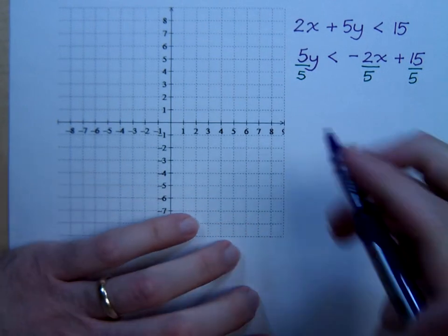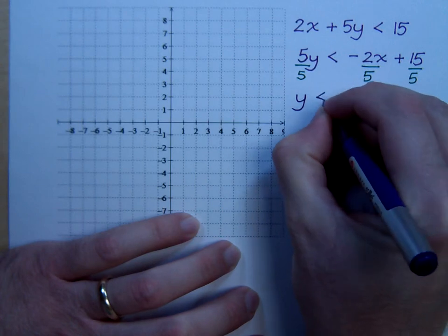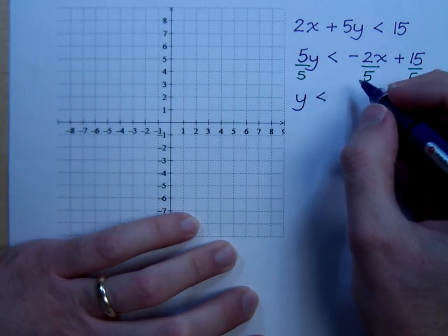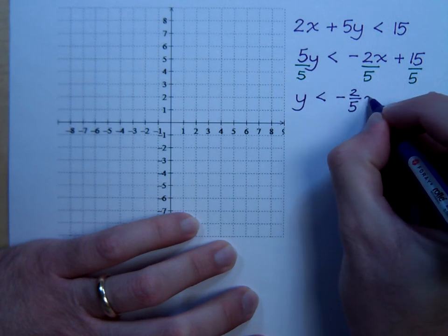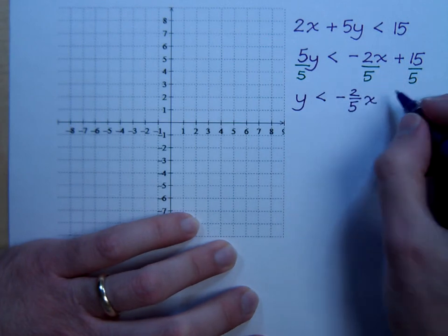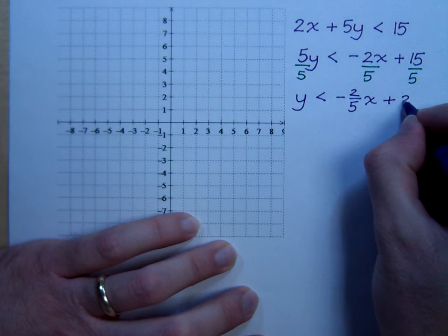So, let's finish solving this guy. Y is less than negative 2 fifths x plus 3.